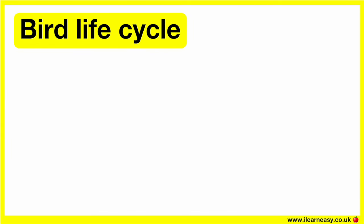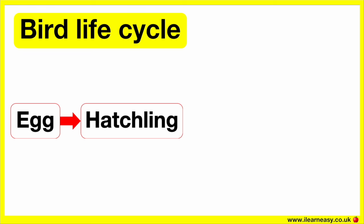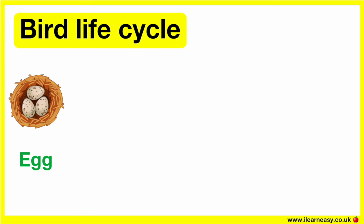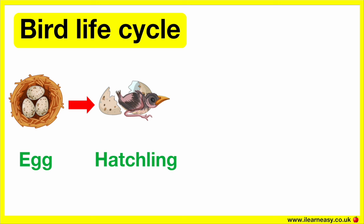The life cycle of a bird is simple and consists of four stages: egg, hatchling, chick, and adult. First, the bird lays an egg, usually in a nest where the egg is incubated by one or both parents, until the embryo inside the egg has developed into a chick. Once it has developed, the egg is ready to hatch. The chick will begin to crack the egg to get out, which can take a few hours or even a few days. The chick that emerges is fragile and can't care for itself — this stage is known as the hatchling.